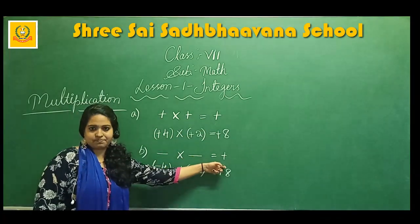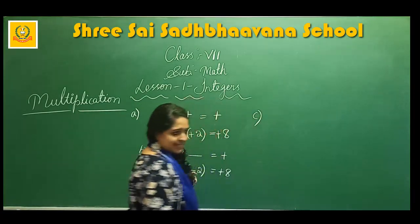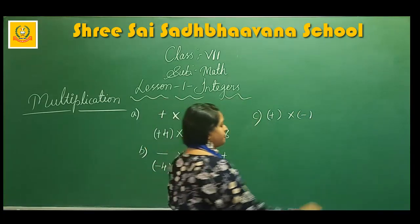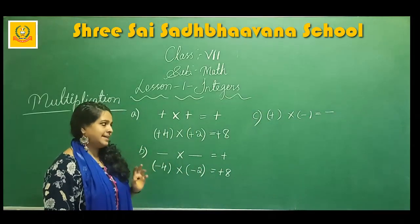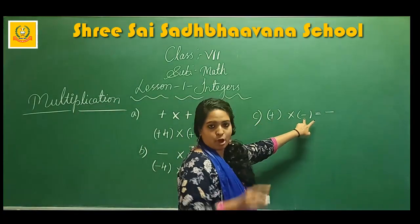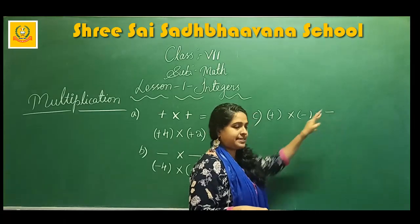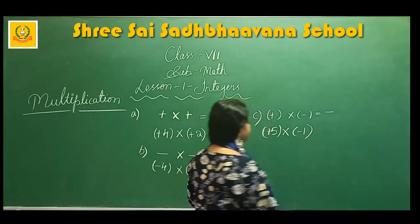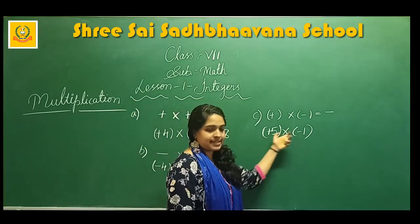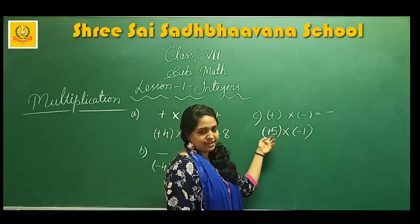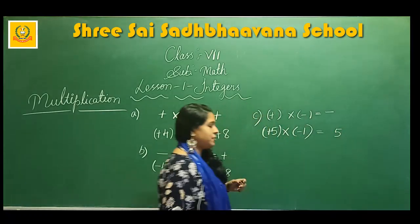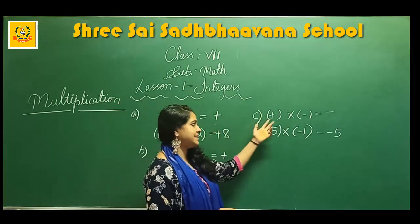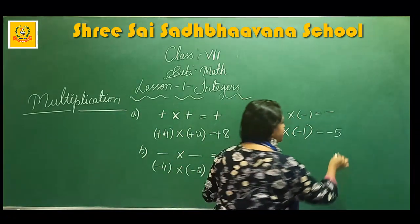Minus into minus it becomes plus — keep it in mind. Plus into plus is plus, minus into minus is plus. Third case: when there is one positive integer and one negative integer, the product will be a negative integer. When you have a plus and a minus symbol and you are multiplying, you will write the negative symbol. Example: positive 5 into minus 1 — multiply as whole numbers: 5 ones are 5, then place the minus symbol.